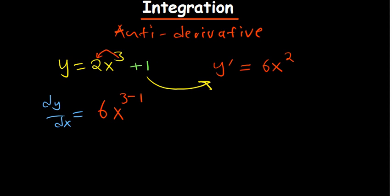In other terms, if you look at a constant, it's like 1 multiplied by x to the power 0. Since 0 times 1 gives us 0, that's why constants disappear. So this becomes 6x².